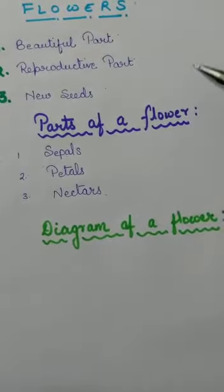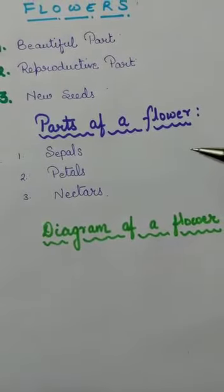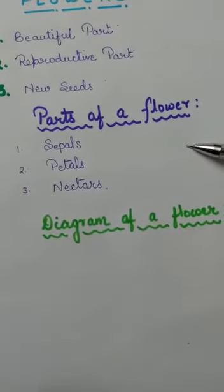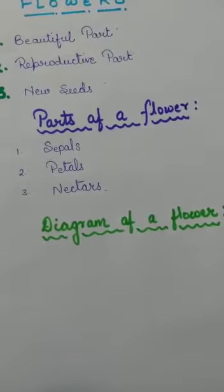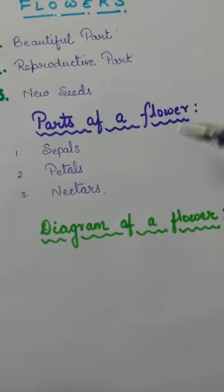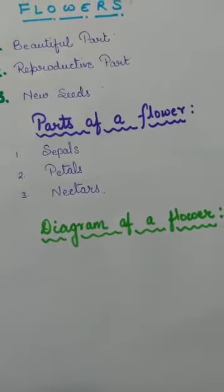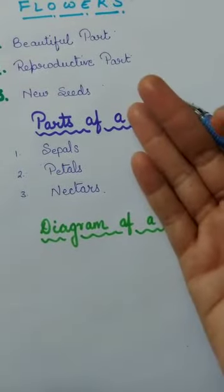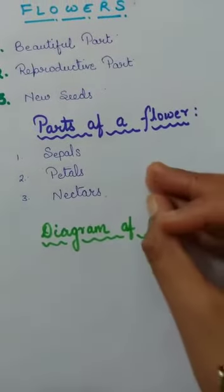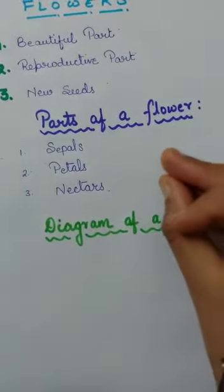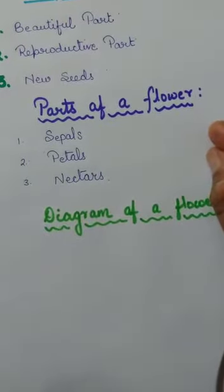Now the question arises: do all green plants have flowers? No. For example, mosses, ferns, and conifers—though they are green plants—they don't have any flowers.